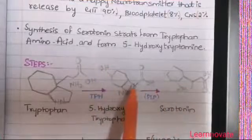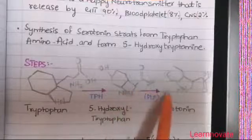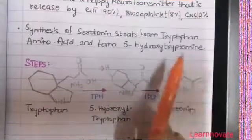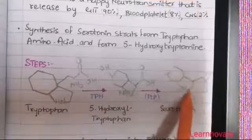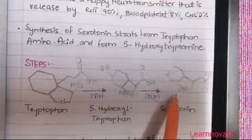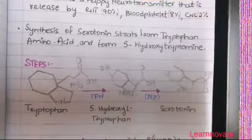A hydroxyl group is attached to the tryptophan. This hydroxylated tryptophan, that is 5-hydroxytryptophan, is then converted into serotonin, that is 5-hydroxytryptamine. This conversion requires a coenzyme that is PLP.